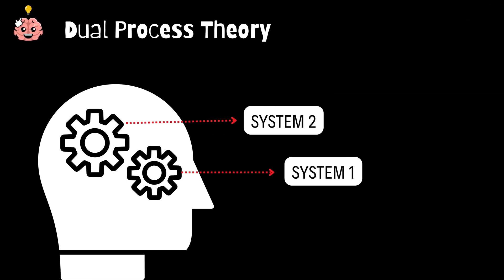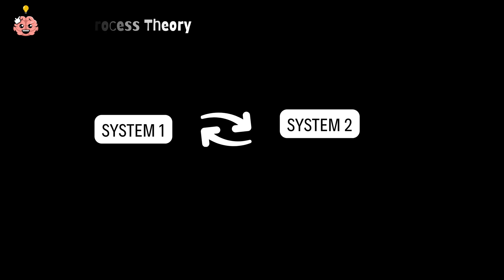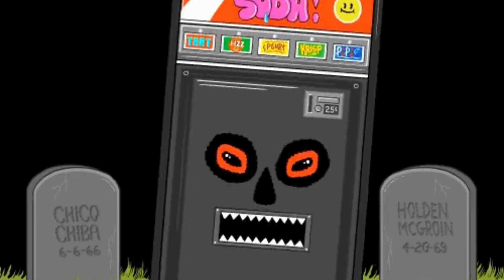To wrap it up, the dual process theory shows us that we're constantly shifting between fast, intuitive thinking and slow analytical thinking. Most of the time, we coast through life on system one, but when the stakes are high, system two is there to help us think deeper, analyze smarter, and maybe avoid becoming another vending machine statistic.